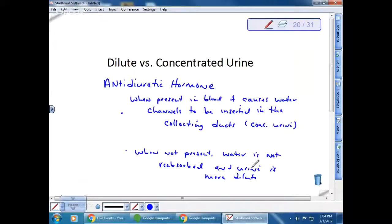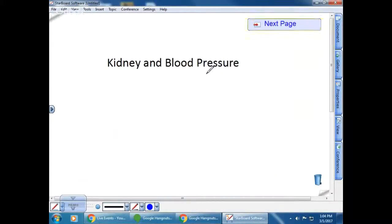This production of concentrated urine is due to that difference in the concentration that's all set up by the juxtamedullary nephrons. The last thing I want to talk about—we're going to end a little early today—is kidney and blood pressure.